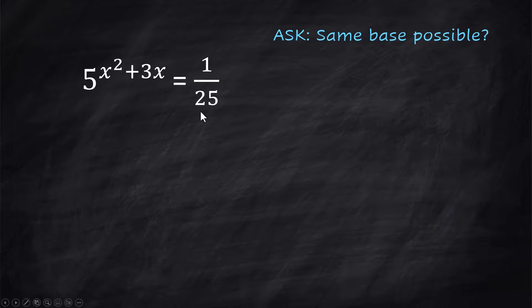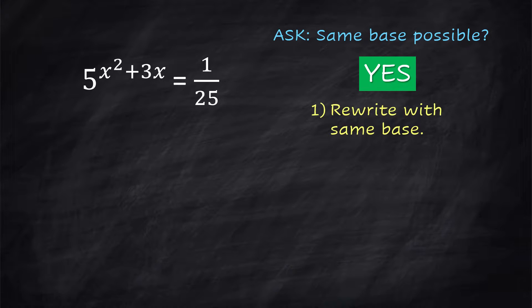It is. 25 is 5 squared. So there's got to be a way to write 1/25 with an exponent base of 5. I'm going to say yes, this is possible. So let's redo it. Let's think about it first.